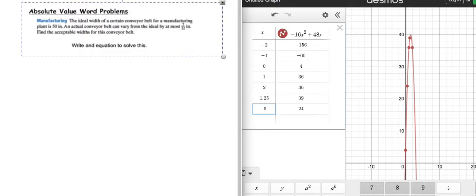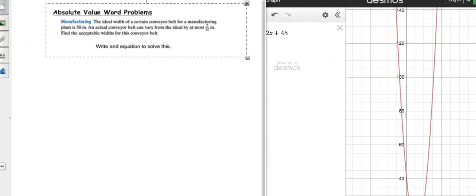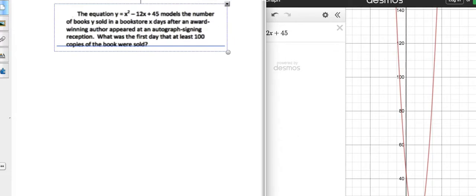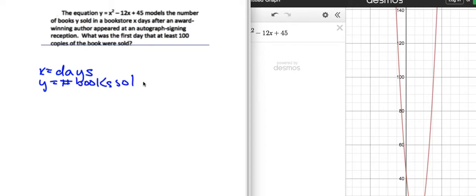For the next one, it's also a quadratic problem, although I went a little too far. So we're going to scoot back. Here we go. So our other quadratic word problem, it says the equation, y equals x squared minus twelve x plus forty-five, models the number of books, y, so that's my y, sold in a bookstore, x days, so this represents the days, so x represents the days, and y represents books, number of books sold.